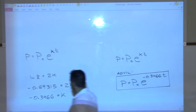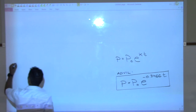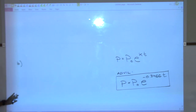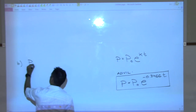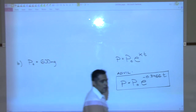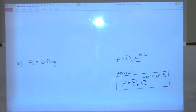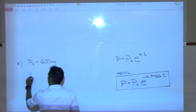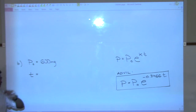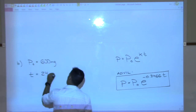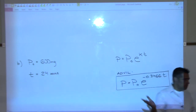Part B: they take 600 milligrams, and we want to know how much is present after one day. P₀ = 600, and T must be in hours — one day is 24 hours. Critically important: do not use 1 for T; you must convert the day to 24 hours. So we compute P = 600 · e^(−0.3466 × 24).